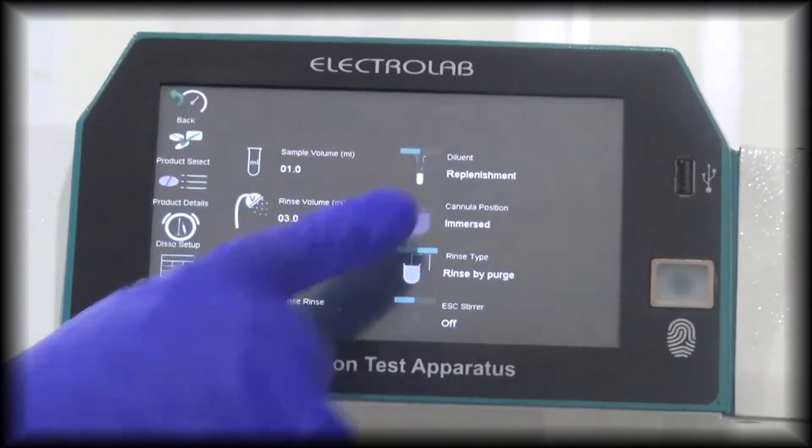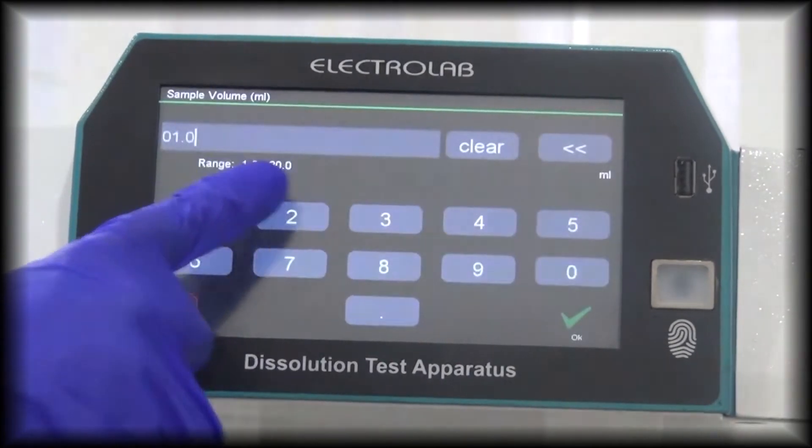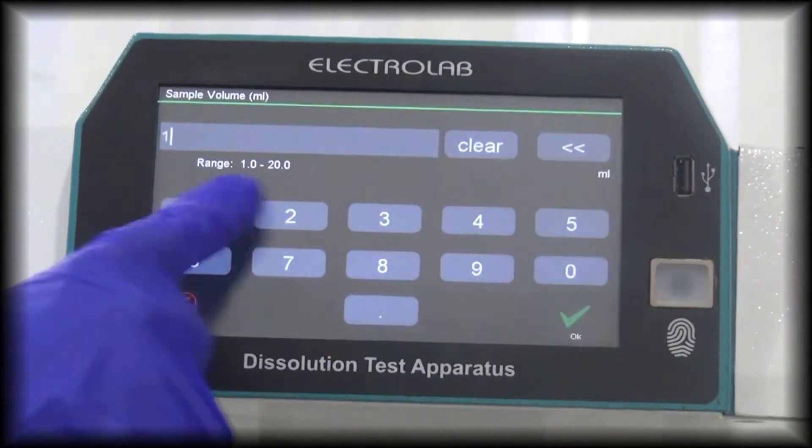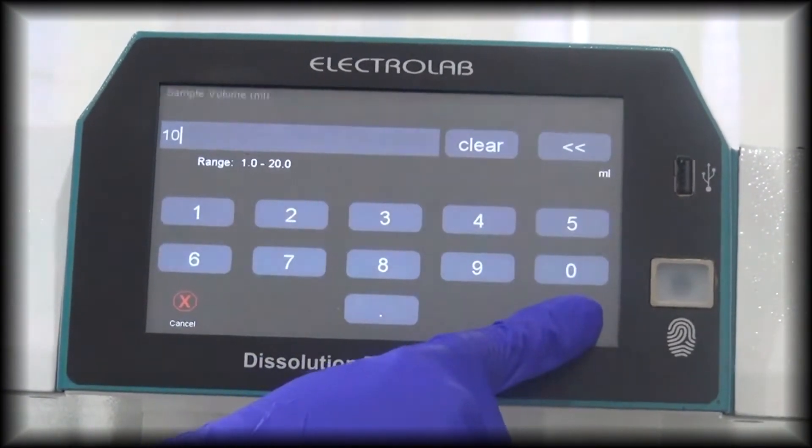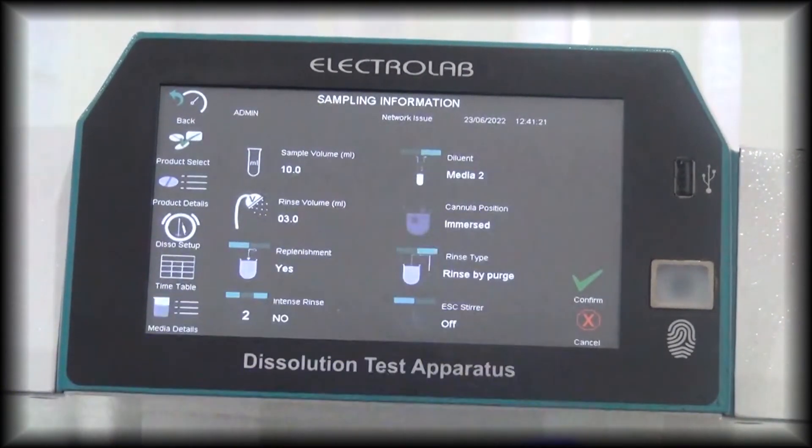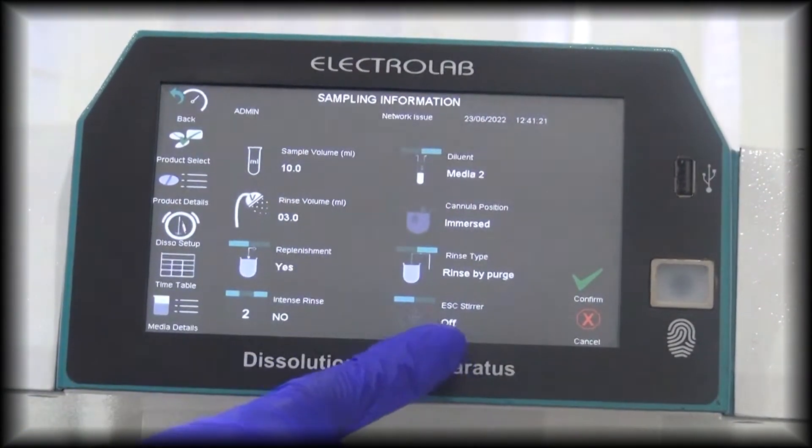In the sampling information, mention the sample volume and the diluent for the dilution. Replenishment media or any other media, for example HPLC mobile phase, can be used as a diluent for online dilution.